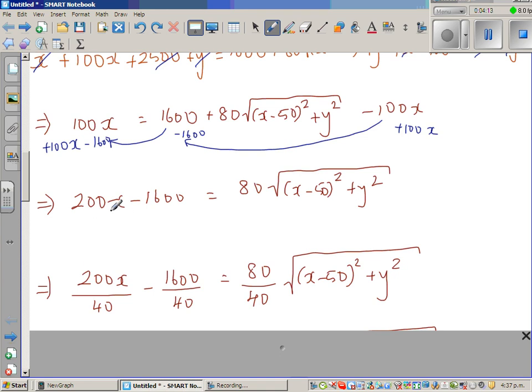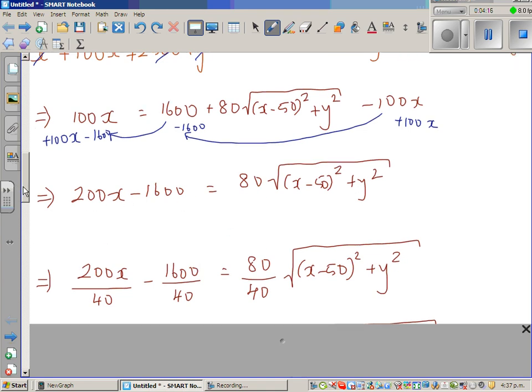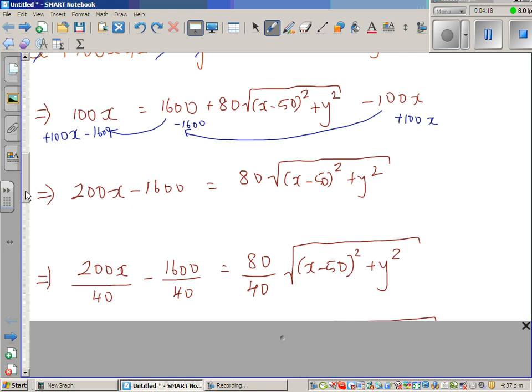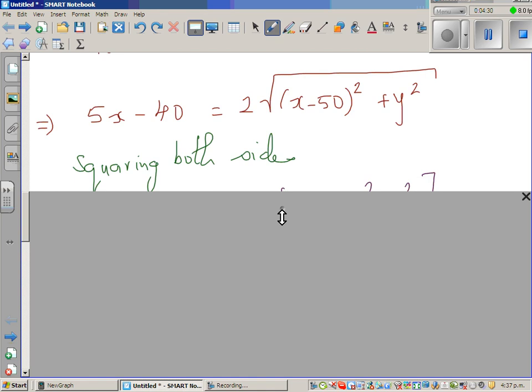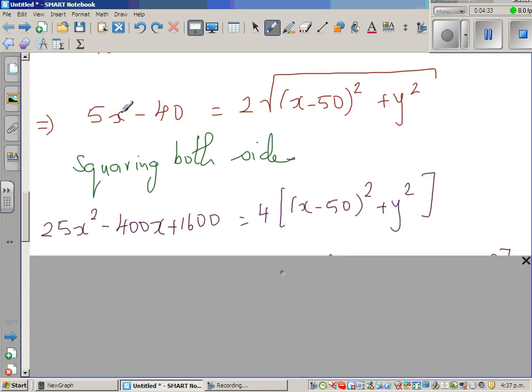Now what I have done is I have divided each by 40 to make this a bit smaller because 40 goes into 200, 1600 and 80. So this simplifies to 5x minus 40 equals 2 times this. Again you have to square both sides. If you square both sides, perfect square is 25x². Then this is 4. I have squared this and I have also squared this. 4 times and the square root will be removed.